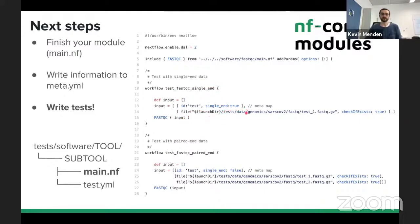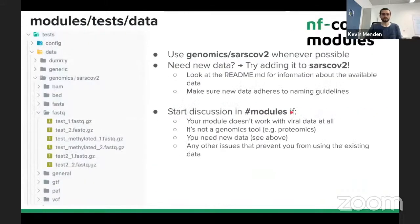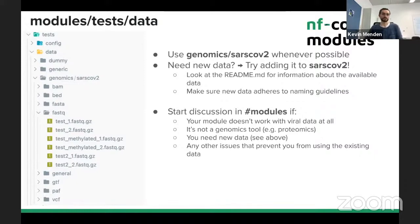To run these modules, you need some data. We have test data in the NFCore modules repository - in this case it uses the genomics SARS-CoV-2 fastq data. The test data on the repository has a generic folder and a genomics folder. The genomics folder contains different organisms, and right now it just contains SARS-CoV-2 because it's a really small organism. It contains BAM files, BED files, FASTA files, and all kinds of other files, so it should contain most of what you need. You should always try to use data from there, but if you need to add data, look at the readme for naming guidelines and ask in the Slack channel, making sure everything is made with the same genome.